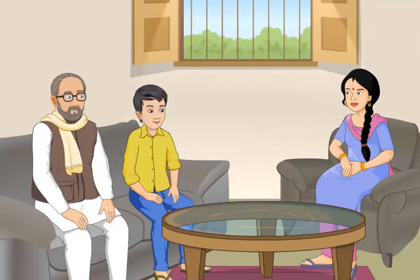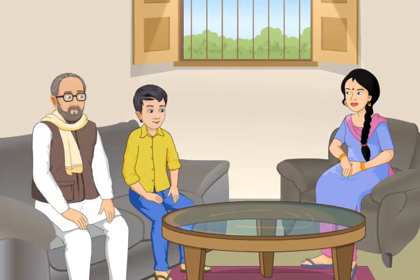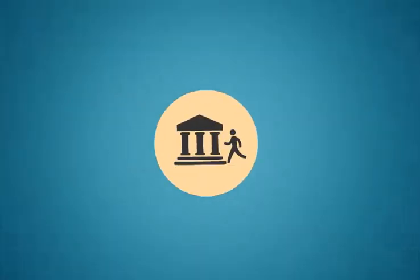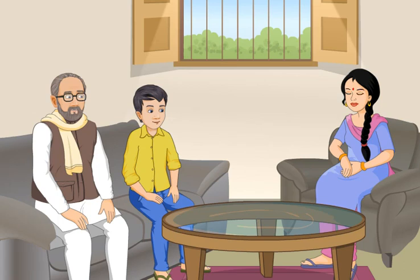What is required to access this service? You should have a bank account, any mobile phone on a GSM network, and a registered mobile number. I have all these. But how can I activate this service? Firstly, visit your bank branch for linking your mobile number to your bank account. Soon you will receive a UPI PIN or UPIN which you need to remember. It is quite easy — I will get it activated soon.